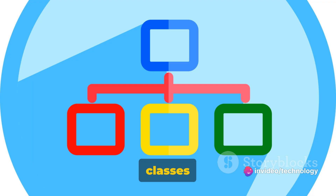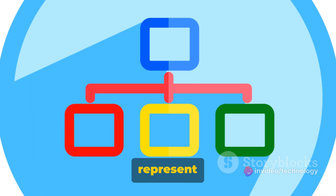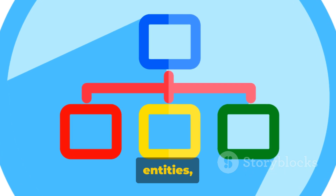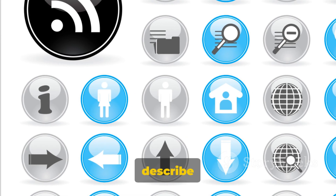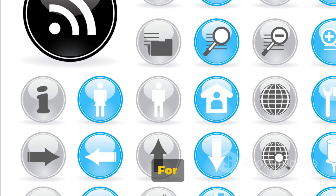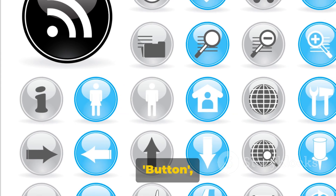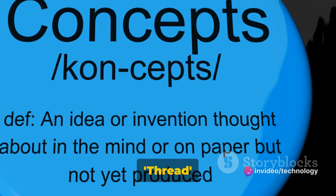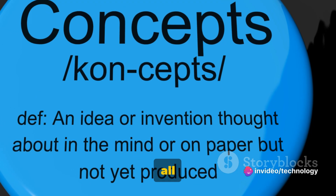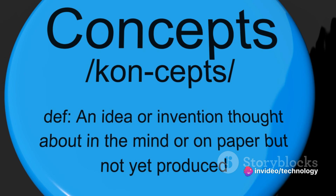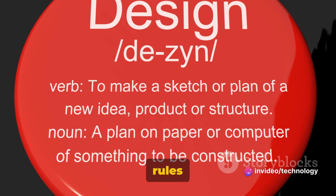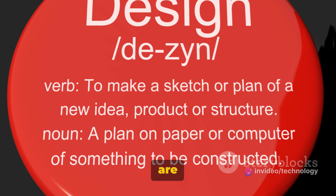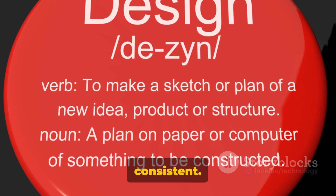The final rule is that class names should be nouns. This is because classes in Java represent objects or entities, and nouns are best suited to describe these. For example, Button, System, or Thread would all be suitable class names. Keeping these rules in mind will ensure your class names are clear and consistent.